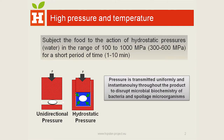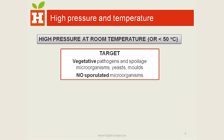What is high pressure and temperature technology? This treatment involves subjecting food to very high pressures transmitted by water, normally between 300 to 600 megapascals for some minutes. This pressure is transmitted uniformly and instantaneously throughout the product to inactivate bacteria. When applied at room temperature or below 50 degrees, the main targets are vegetative pathogen and spoilage microorganisms, but sporulated microorganisms are not inactivated by this technology.